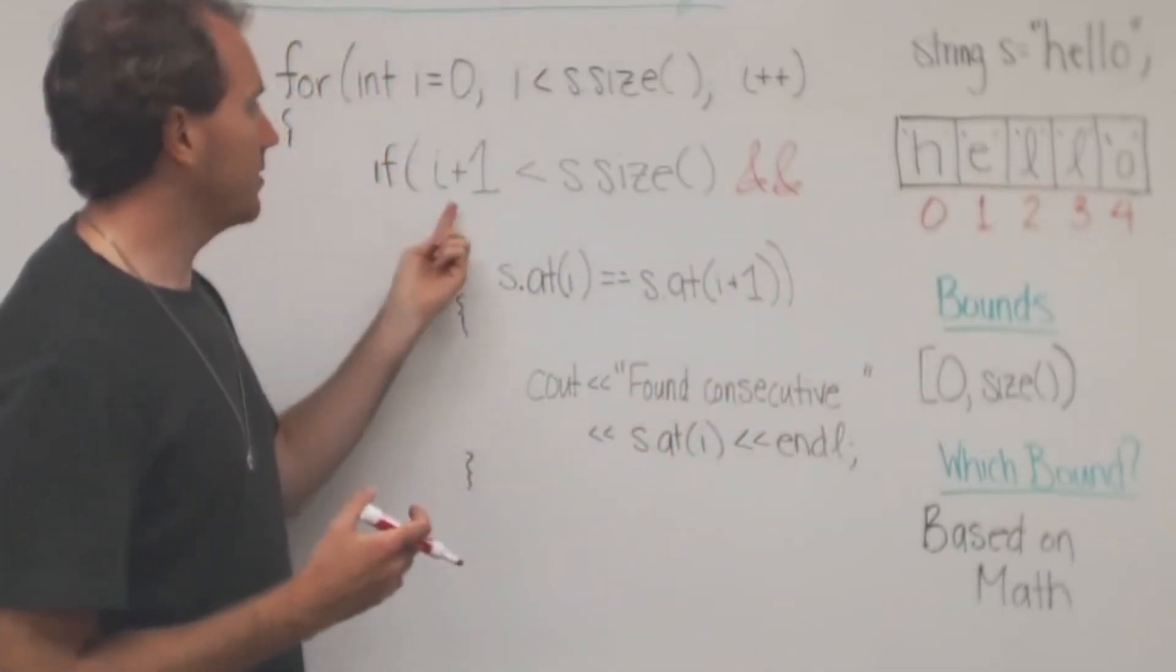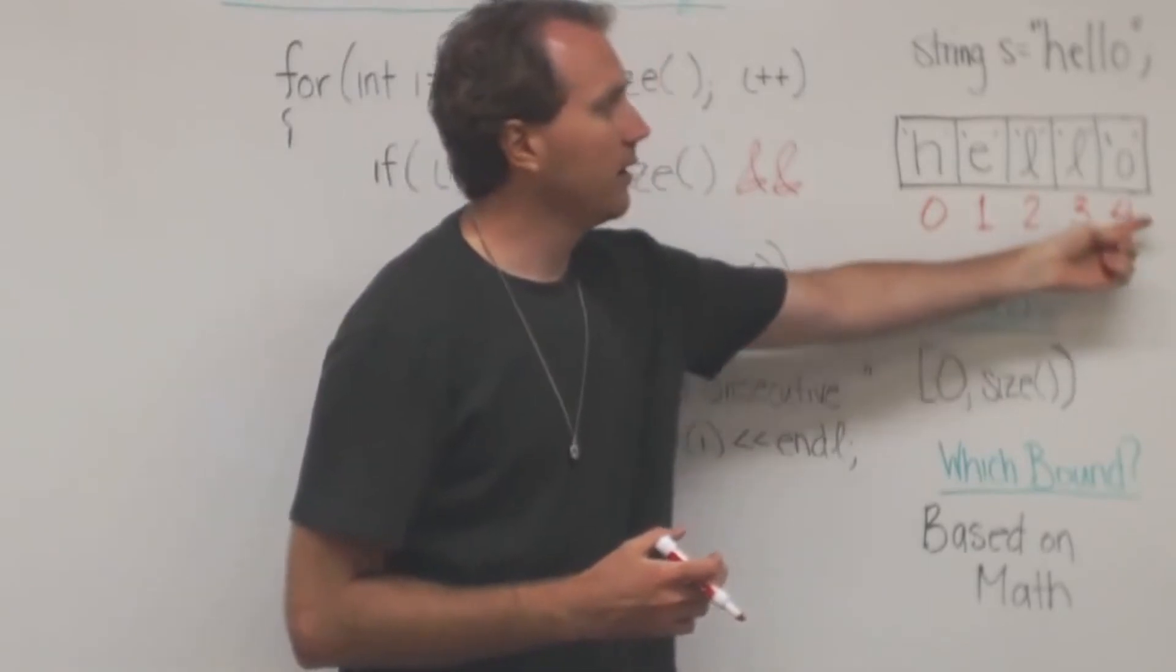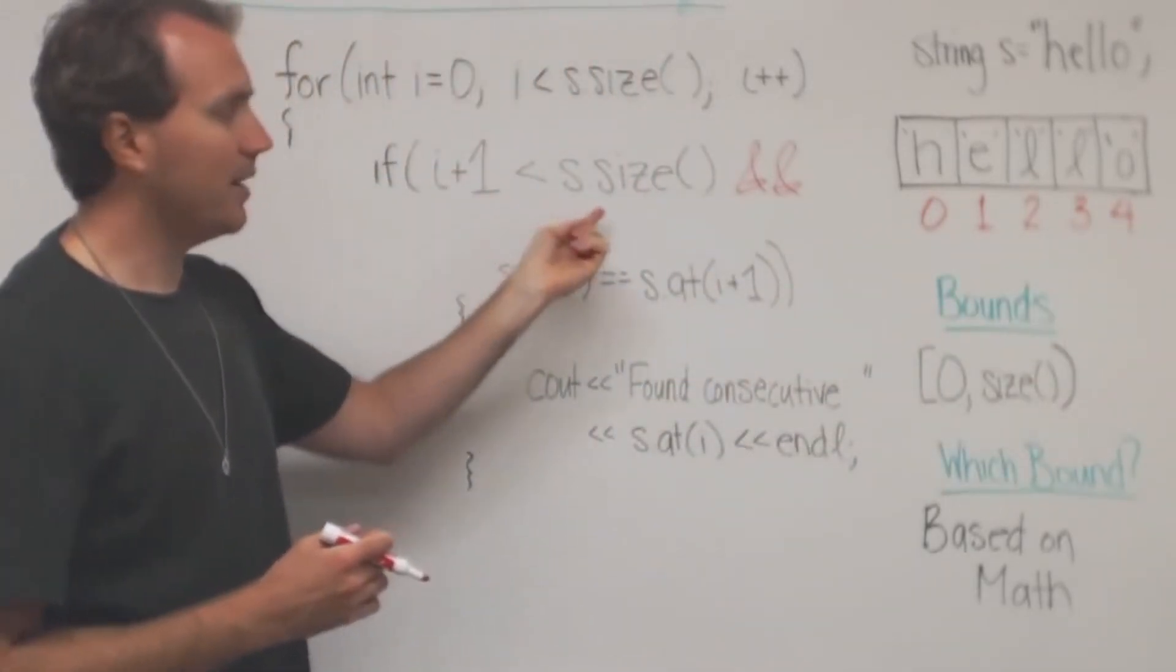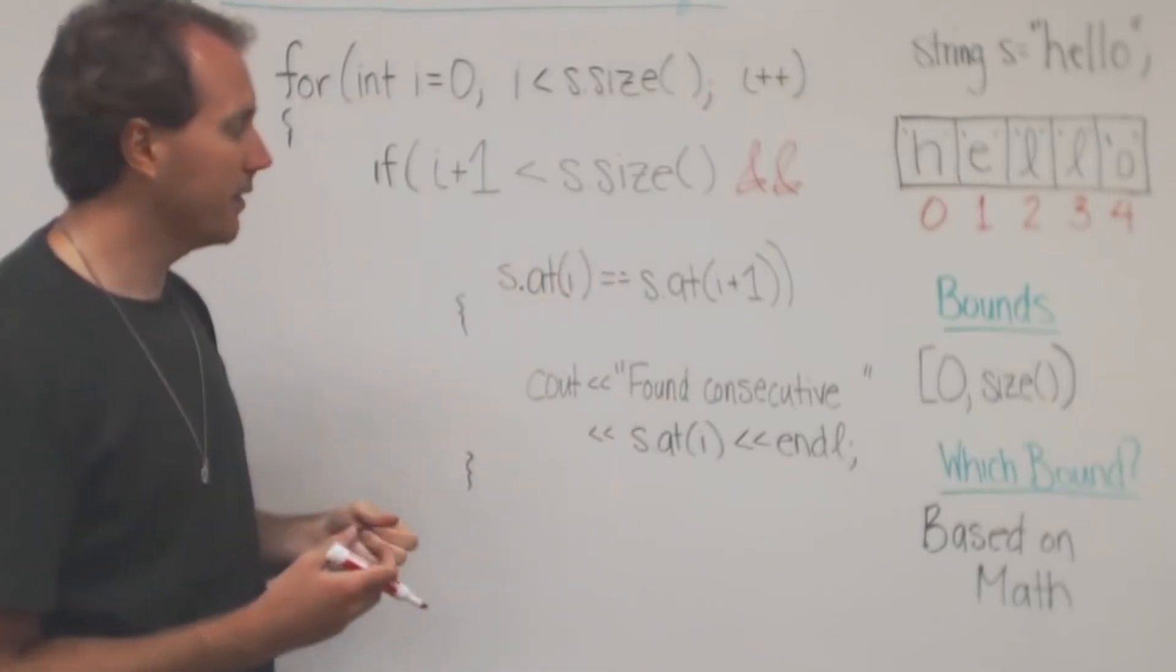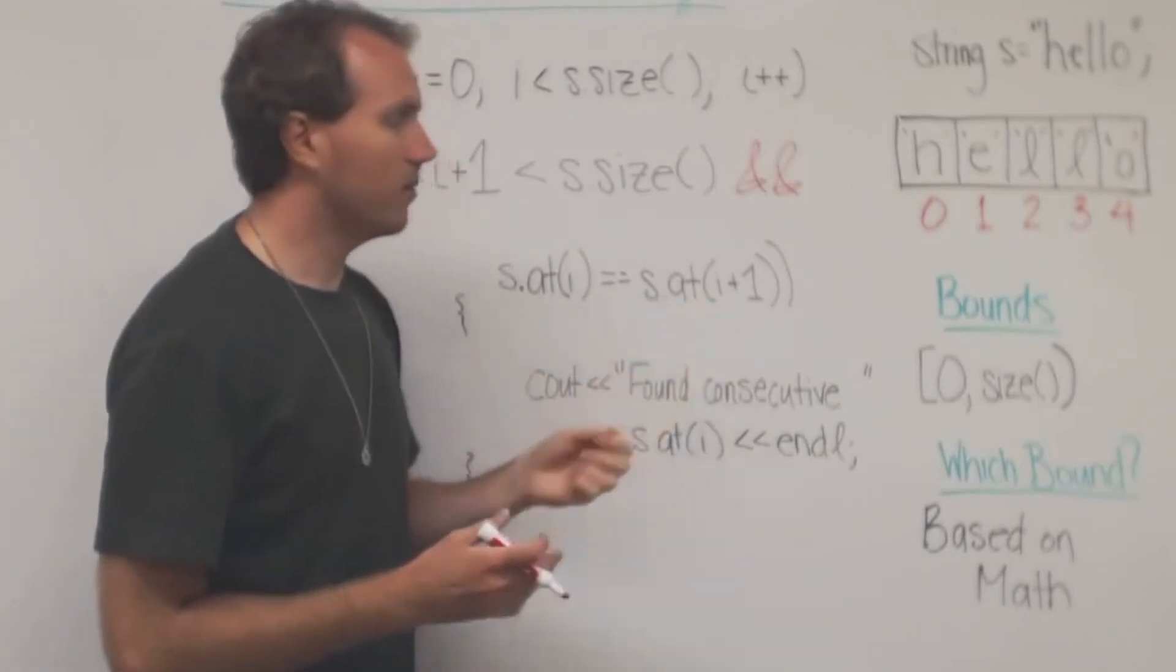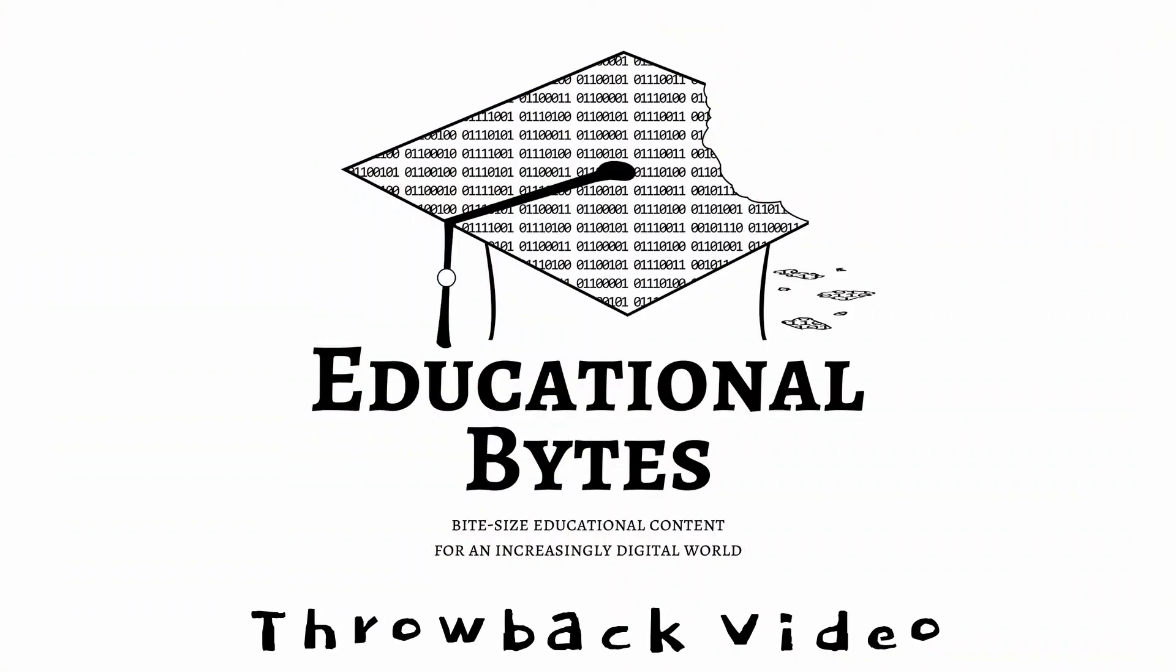But when we get to the four, we add one and this becomes false because five is not less than five. So we never go in and execute this at of I plus one.